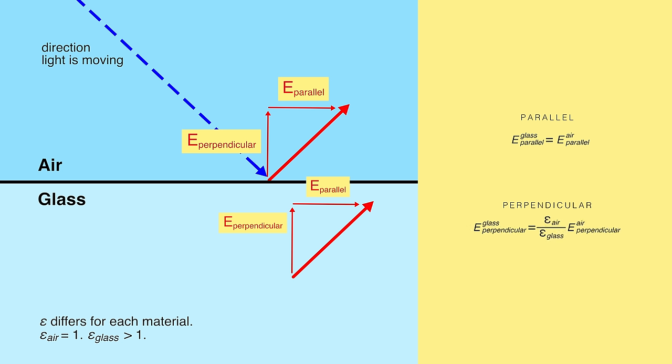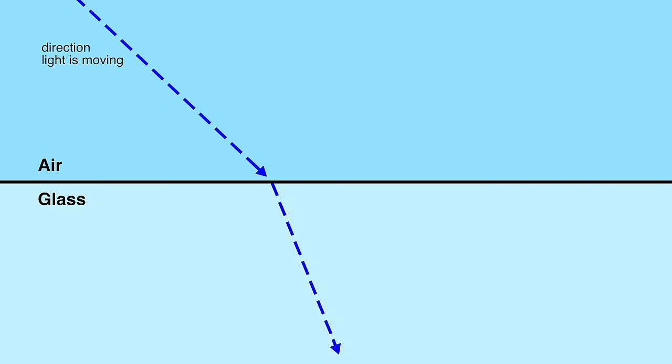We can then manipulate these equations to see what the electric field in glass should look like. Because epsilon is bigger in glass than in air, that means that the perpendicular electric field in glass has to be smaller than it is in air. Now we remember that the direction the light travels is perpendicular to the electric field, so we can put in an arrow to show the direction light must travel in the glass. And finally, we can see what light does when it enters glass or water or any transparent medium. It bends. And the reason that it bends is because the epsilon in glass is bigger than in air.